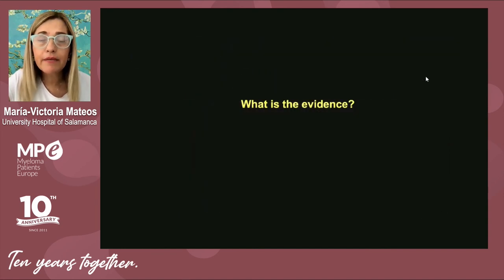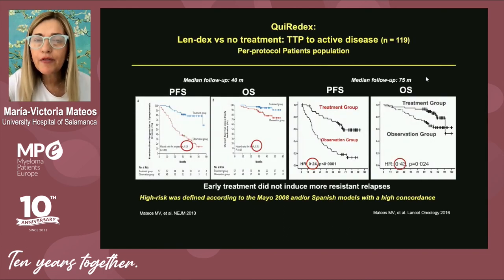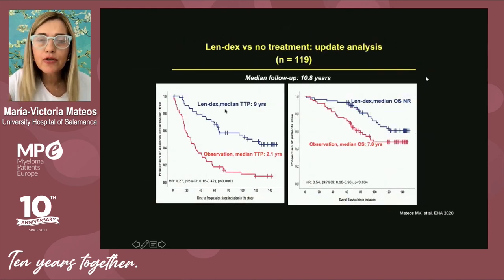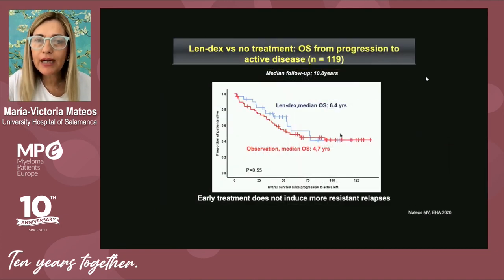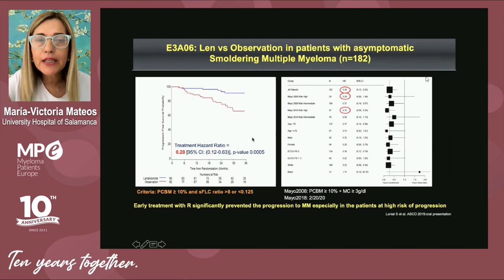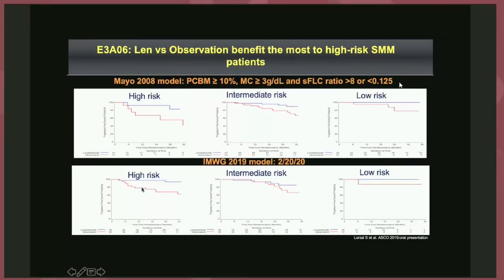There is evidence supporting early treatment in high-risk smoldering myeloma. The first study, conducted by the Spanish myeloma group more than 10 years ago, treated high-risk smoldering myeloma patients with lenalidomide and dexamethasone and observed a significant benefit in time to progression — two years versus nine years — with a benefit also in overall survival. These data were later confirmed by a study in the US with lenalidomide versus observation, showing the same magnitude of benefit, especially in high-risk smoldering myeloma patients.